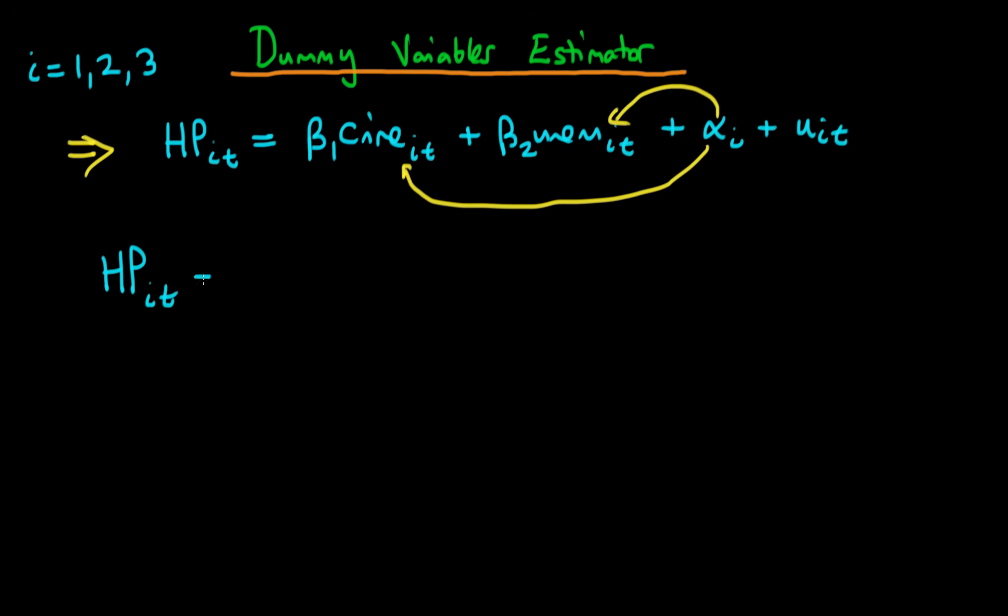And all we do is we have our original equation so beta 1 times crime i t plus beta 2 times unemployment rate in city i at time t. But then what we do is we include dummy variables for each of the cities or technically for each of the number of cities minus one because we don't need to include dummy variables for each of the cities.